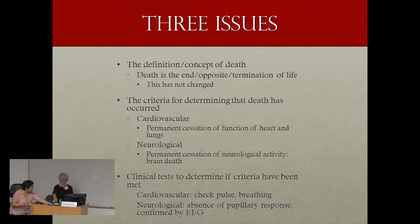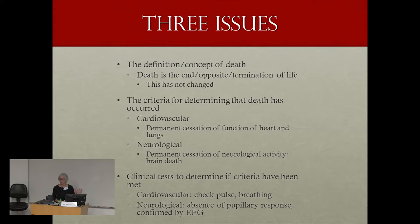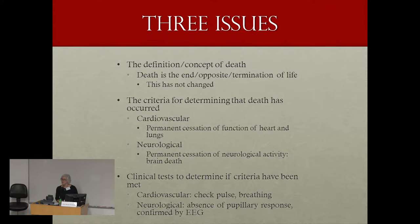Then we can talk about the criteria for determining that death has occurred, and that has become a very controversial issue. I'm going to talk specifically about two sets of criteria: the older, more traditional cardiovascular criteria, which is permanent cessation of heart and lungs — when that happens, the organism is dead. The newer is the neurological criteria, the permanent cessation of neurological activity, also known as brain death.